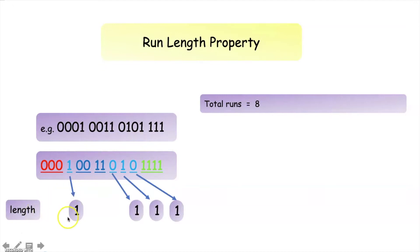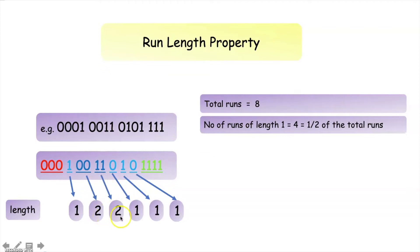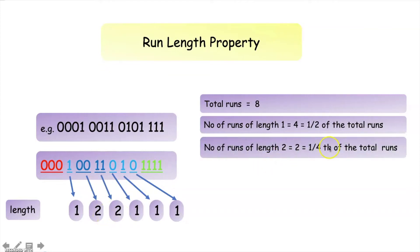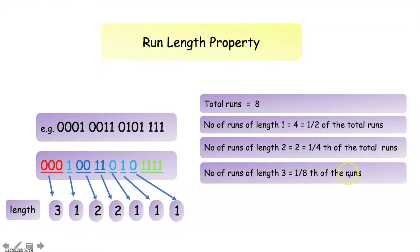We can also see that the number of runs with length 1 is equal to 4, which is half of the total runs. The number of runs with length 2 is equal to 2, which is half of 4 (one fourth of total runs). And we have only one run with length 3, which is half of 2 (one eighth of total runs), and so on.